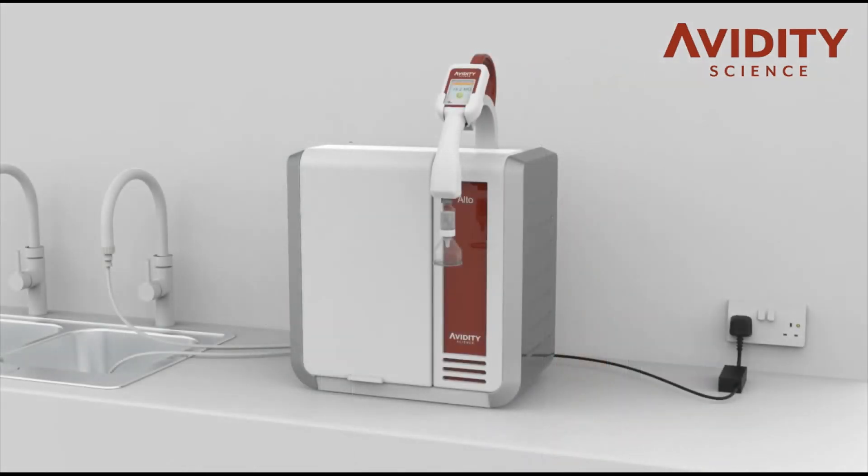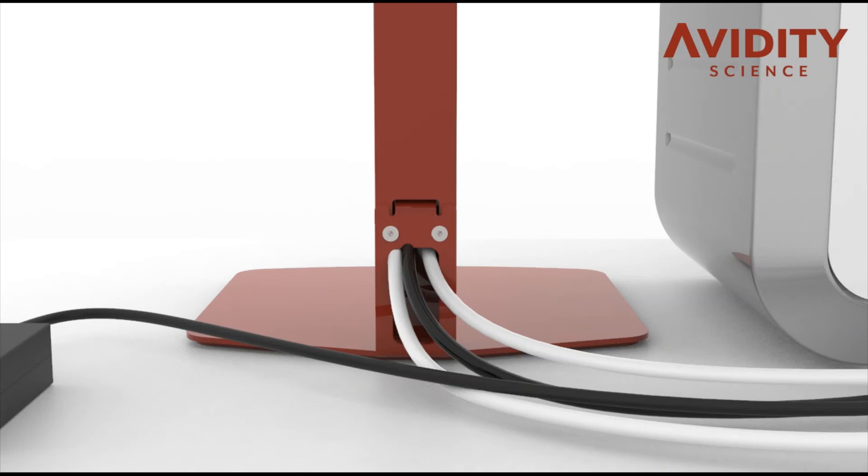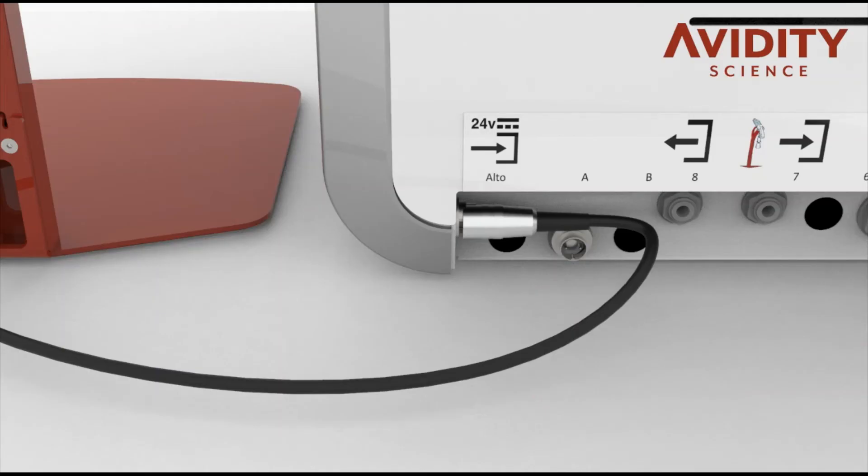For the remote dispense option, the dispenser must be no more than 2.5 metres away from the system. Insert the tubes from the remote dispenser matching the symbols on the system. Insert the remote dispenser power cable into port A and lock into place by turning the collar clockwise.